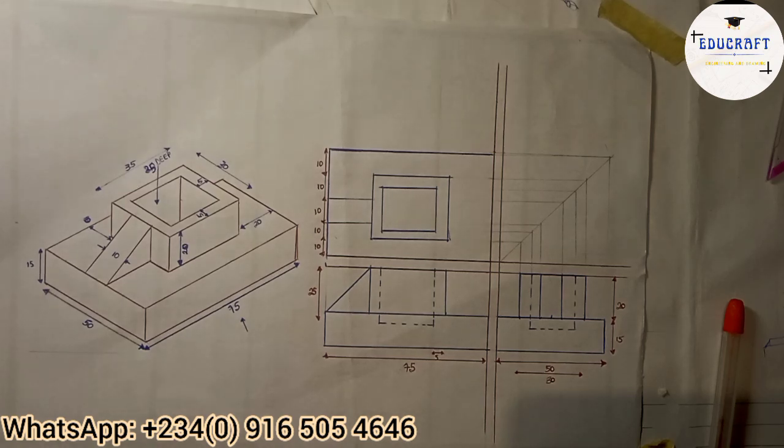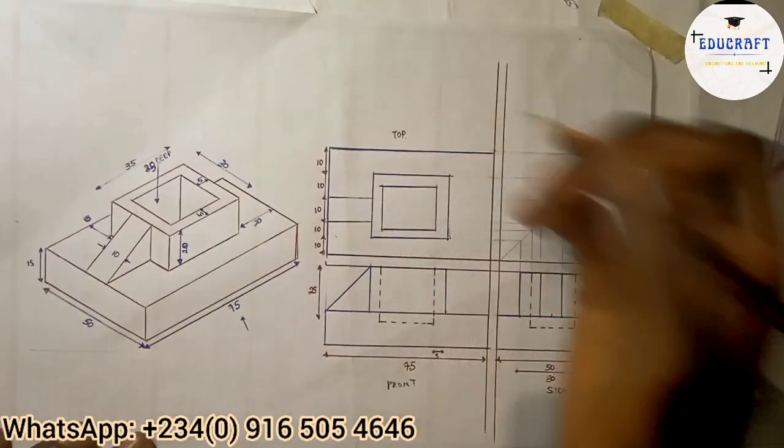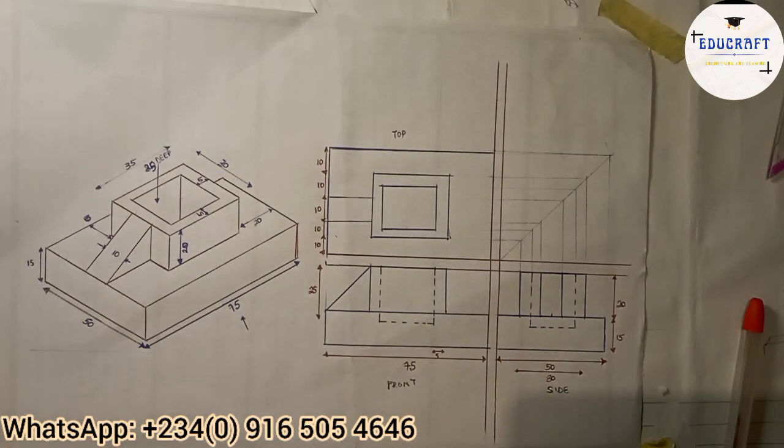So guys, after dimensioning, this is how the orthographic view looks like in third angle projection. Thank you guys for watching today's video. Please remember to like, share, and subscribe for more educational content like this. Now if you want to know how to apply the same techniques for first angle projection, then click on this video above - that's the next phase.